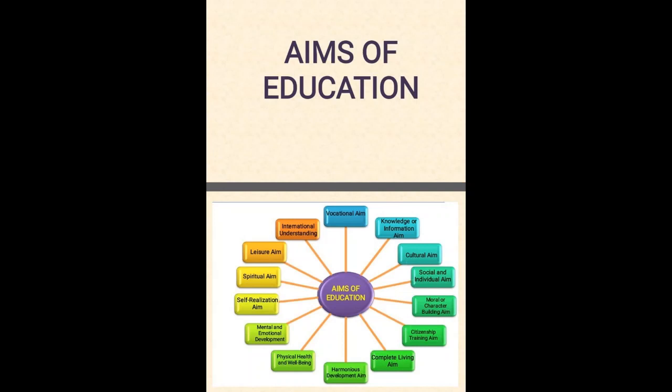What are the branches of philosophy? The main divisions of philosophy are: Number 1, Metaphysics; Number 2, Epistemology; Number 3, Axiology. There are many philosophies of education. Traditional philosophies are: Idealism, Naturalism, Pragmatism, and Realism. Then modern philosophies are: Supernaturalism, Humanistic existentialism, Progressivism, Behaviorism, Humanism, Experimentalism, and Reconstructionism.